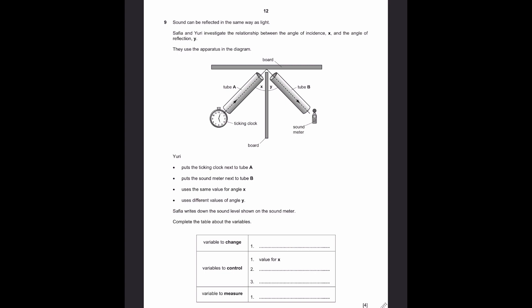Complete the table about variables. The variable to change, that means the independent variable. The independent variable is the angle Y because different values of Y, that means we are changing it. Now variables to control, which means they have to be constant. The position of ticking clock and the position of sound meter and then the value of X. Variable to measure, what do you mean by that value? It is the loudness of the sound.